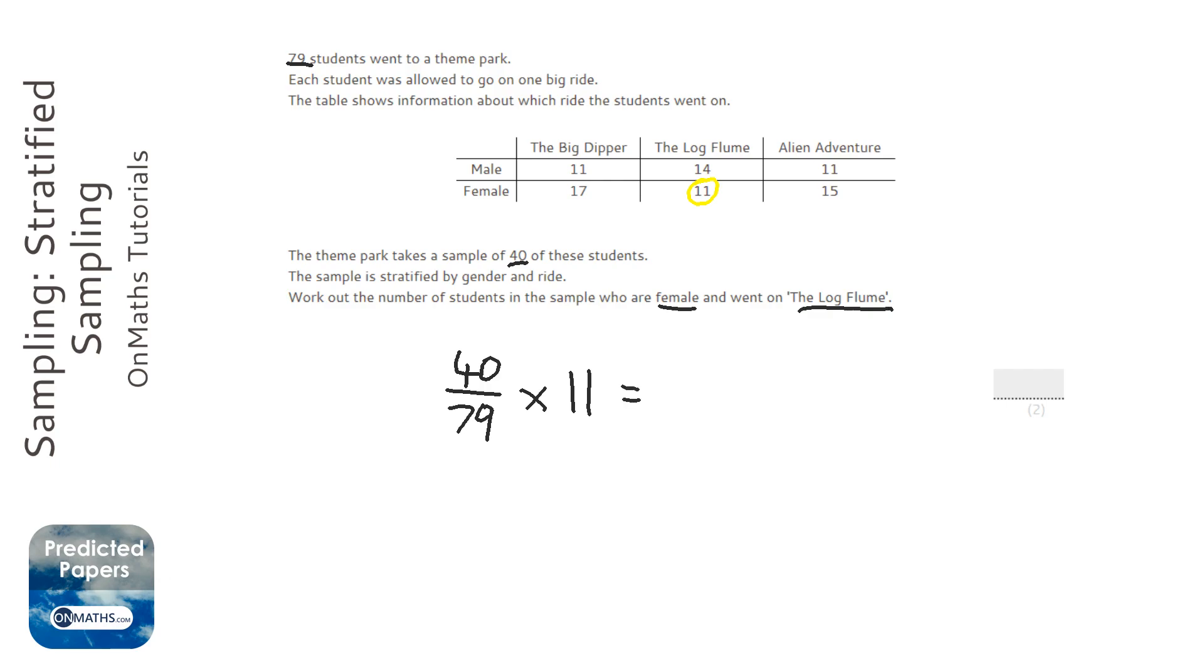So just times it by the amount that we're interested in. I'll do that on my calculator now: 40 over 79 times 11 equals 5.5692. Unfortunately, well fortunately, you can't carve up a person, so there's no point of having 5.56 as an answer.